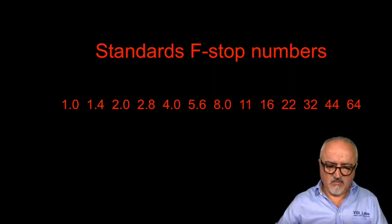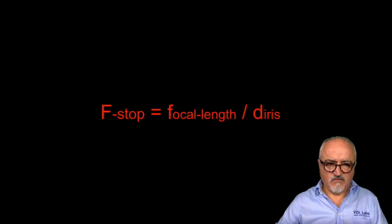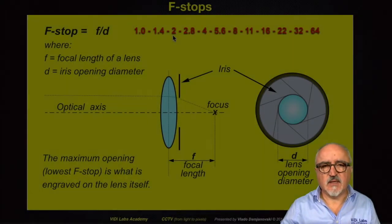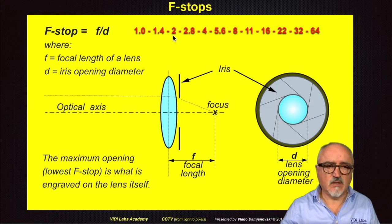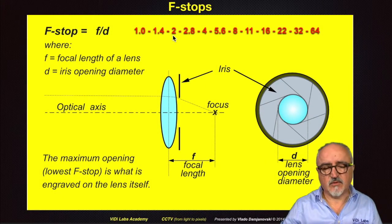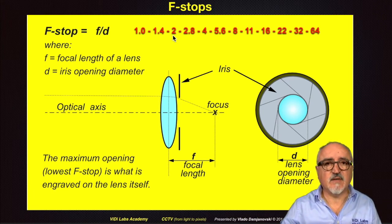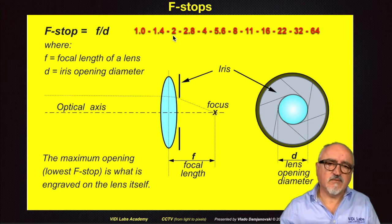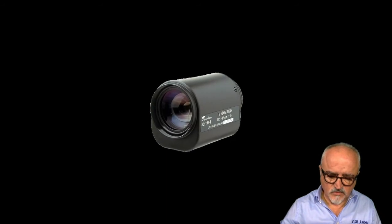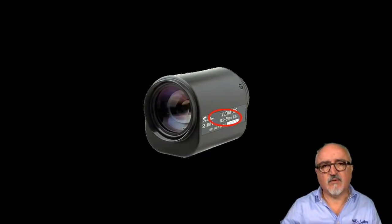In essence, f-stop is simply the light-gathering ability — the direct ratio between the focal length and the diameter of the iris opening. You need to choose a lens with as low an f-stop number as possible for the given focal length to cover the angle of view that you want. I would also like to clarify the f-stop in regards to zoom lenses as well as varifocal lenses. For example, assume we have a zoom lens of 11.5–69mm with an f-stop of 1.4.